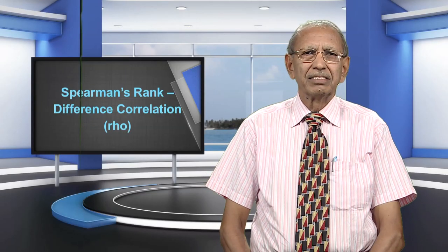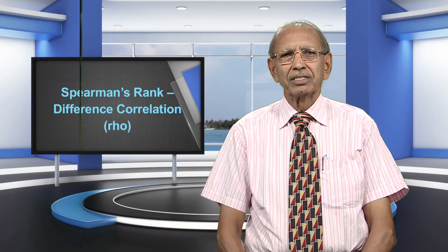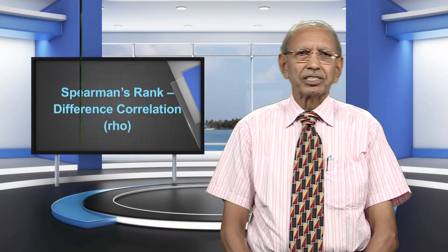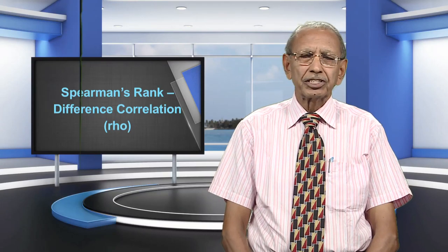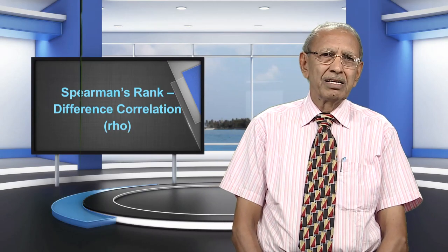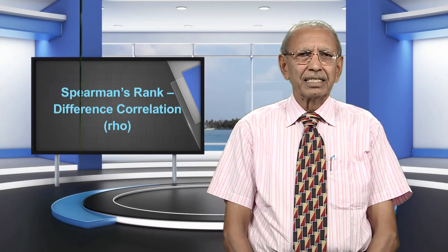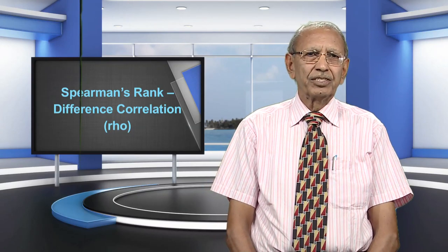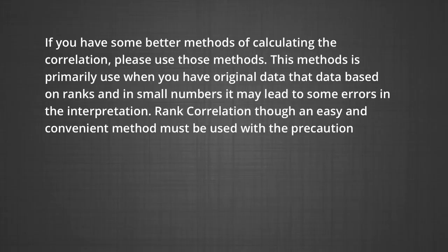In this module, we calculated Rho and found both inverse and positive relationships, providing interpretations for each. Though rank difference correlation is a very easy and convenient method, you need not use it all the time. If better methods of calculating correlation are available, please use those. This method is primarily used when you have ordinal data — data based on ranks — and with small numbers it may lead to some errors in interpretation. Rank correlation, though easy and convenient, must be used with precaution.